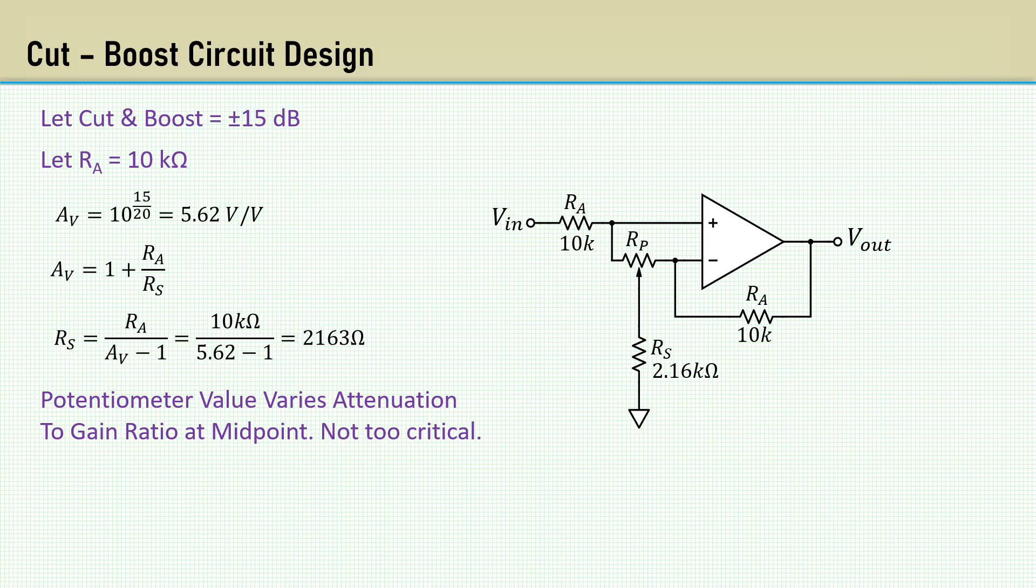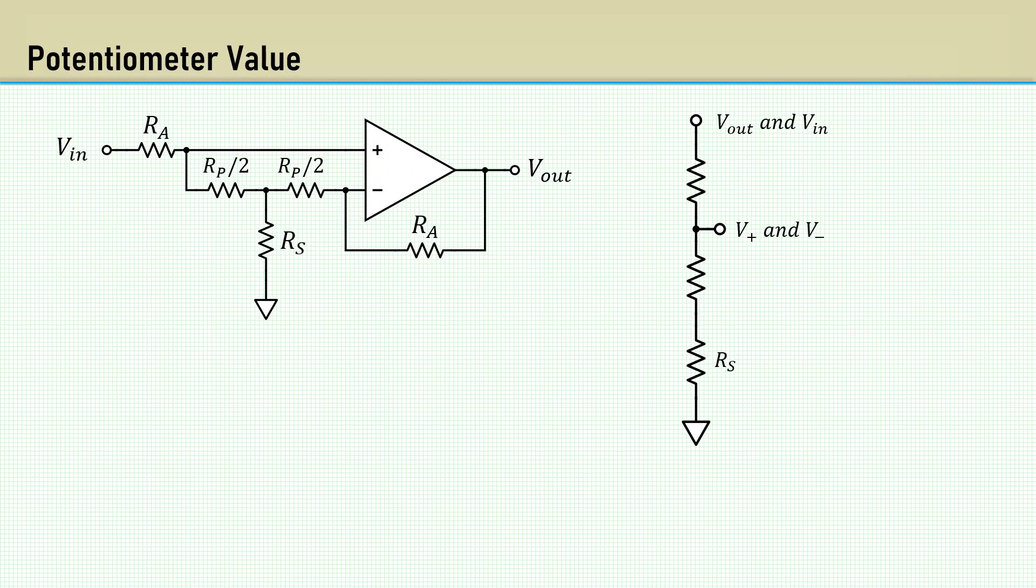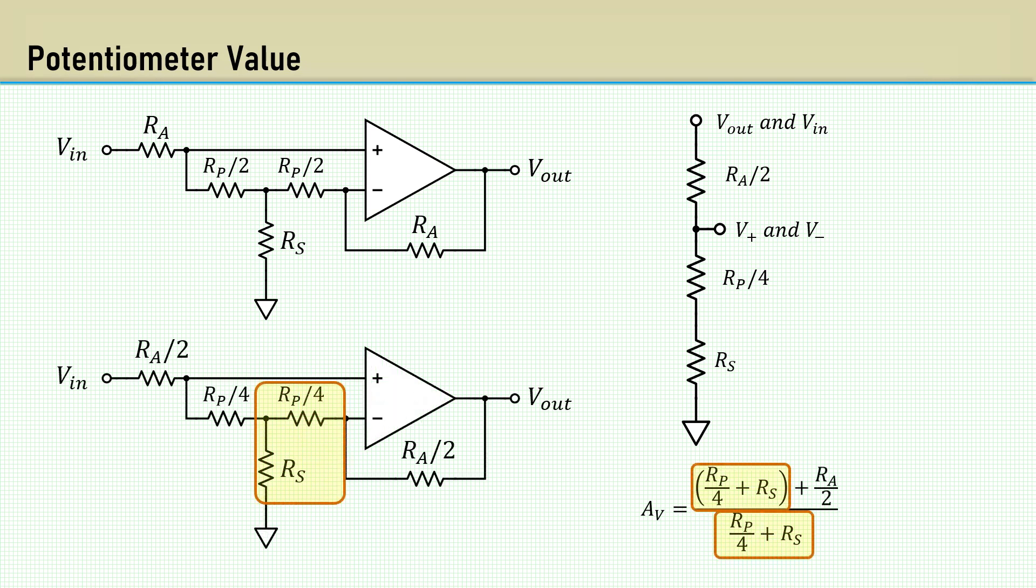From our previous analysis, we had the equivalent RA over 2 resistance between the Vout-Vin and the op-amp input terminals. We had the pot split in half, so the equivalent full potentiometer value would be RP over 4. We can write the gain equation based on the equivalent circuit elements. The equivalent return resistor in the feedback path is RP over 4 plus RS.